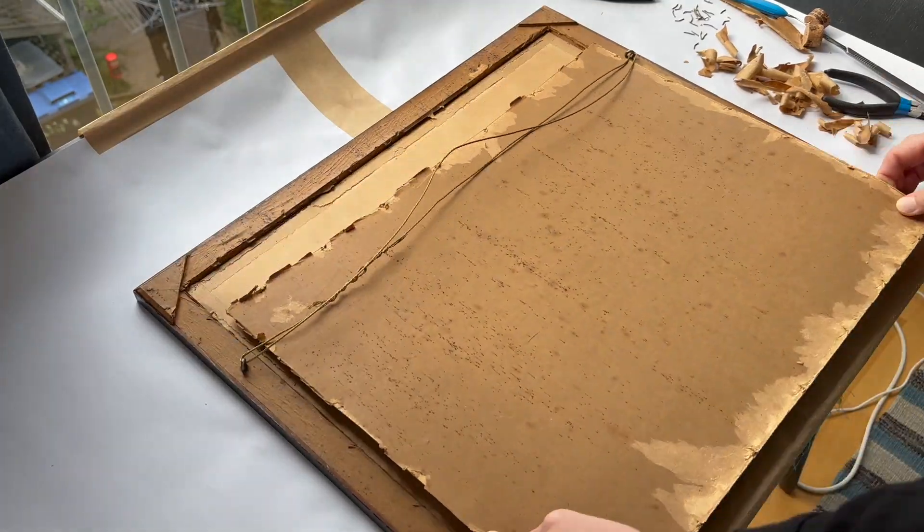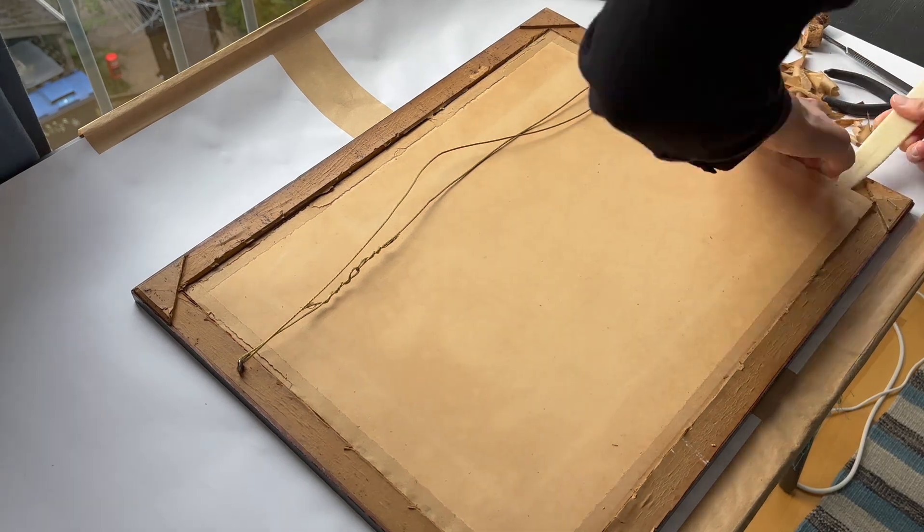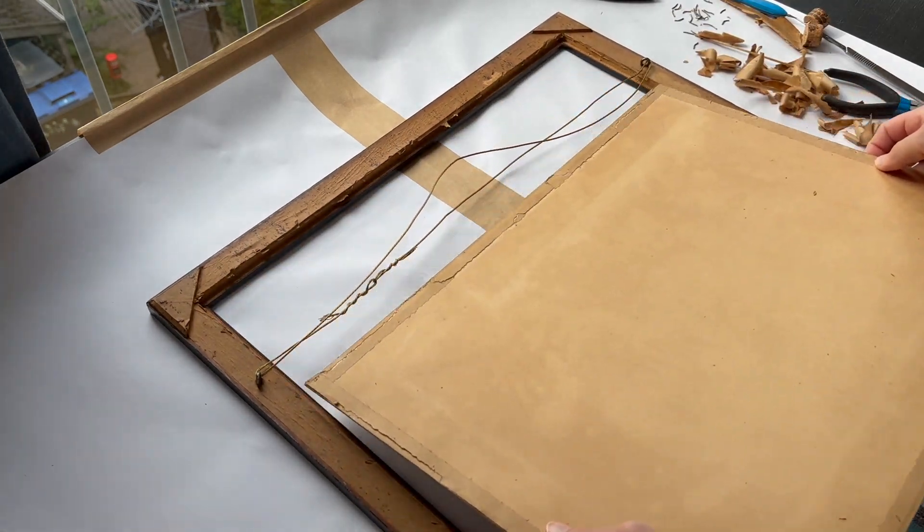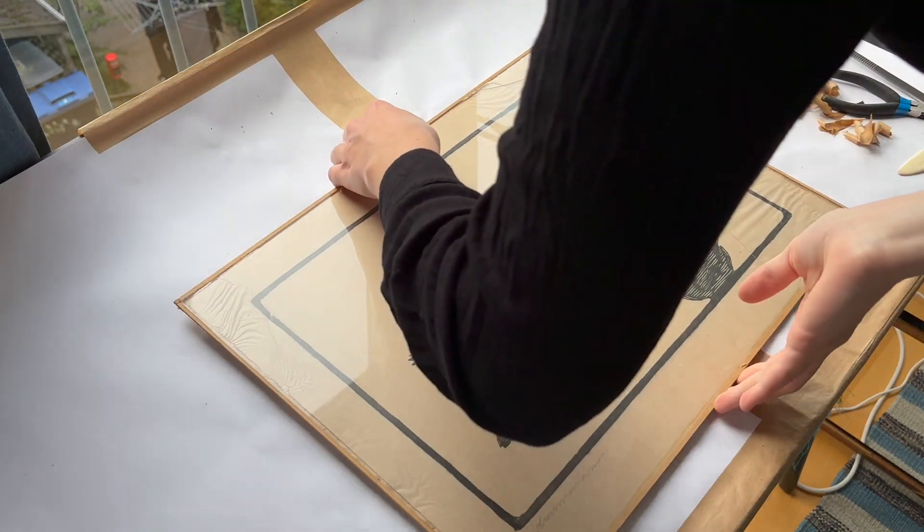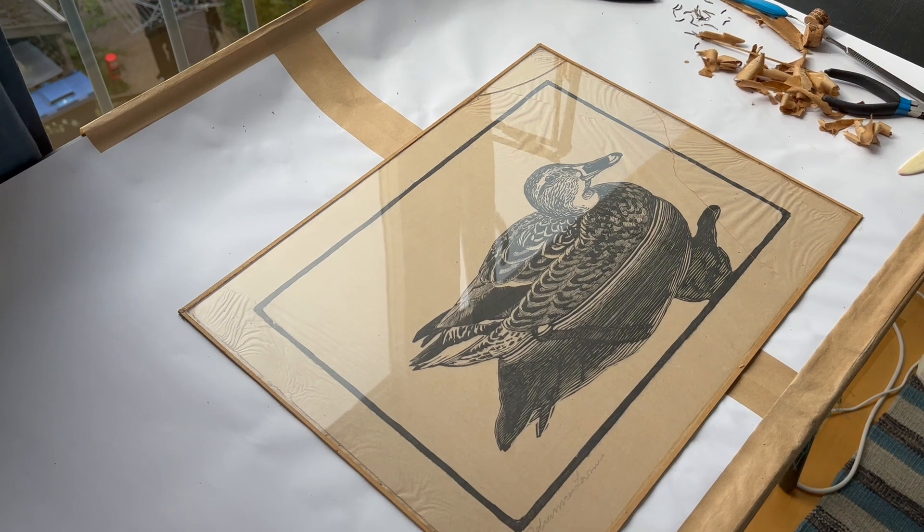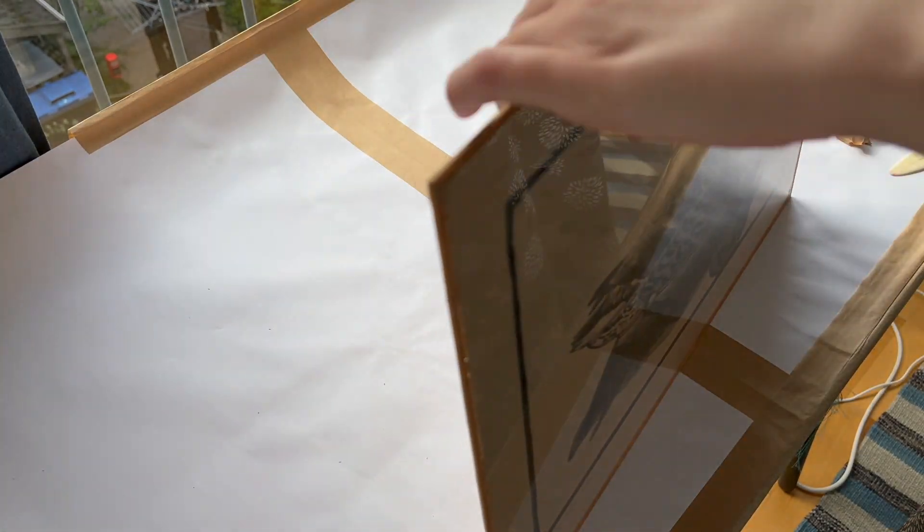We first need to free the object from its frame so we can examine it properly. Once all the nails and backing board have been removed, I can see that it has been mounted with an extra piece of cardboard at the back and tape around the glass.